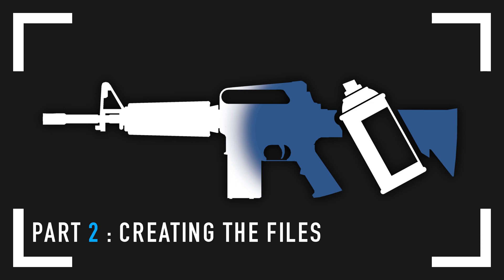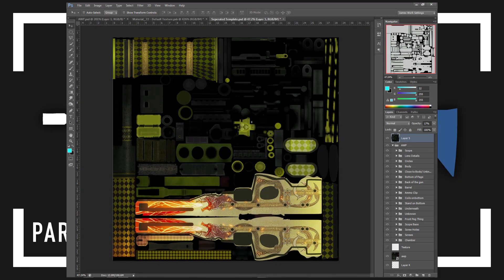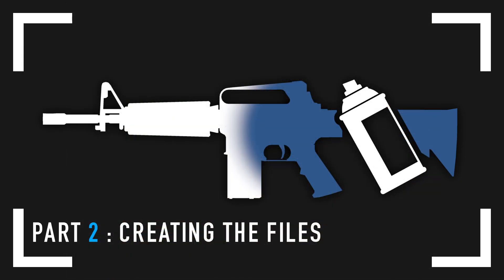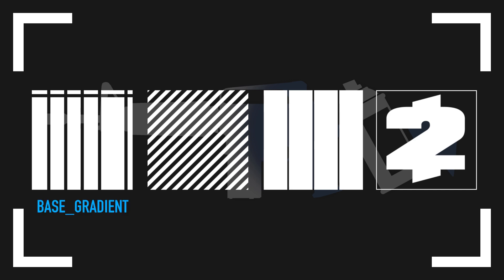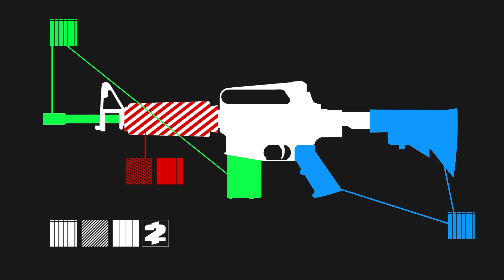Making skins for Payday 2 is different from making skins in other video games. While in most games you just paint over the weapon's texture, in Payday there are simply too many different weapon mods and attachments for each gun. That's why Overkill came up with a different way of making skins that also comes with its own benefits. Skins are split into four different textures: the base gradient, the pattern, the pattern gradient, and the sticker. You can apply one of each to every single weapon part and also reuse them for different parts.